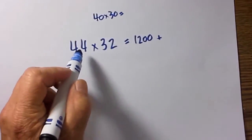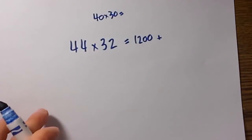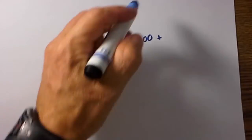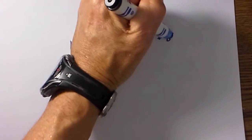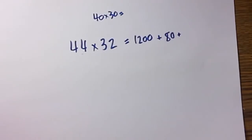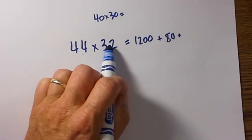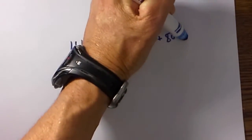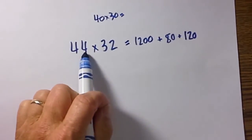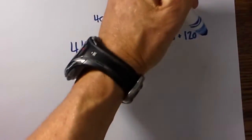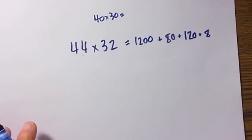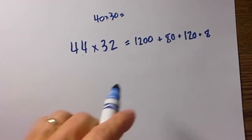The next step is we take 40 times 2 which is 80. Then from 40 plus 2, the next step is 4 times 30 which is 120. Then we go 4 times 2 which is 8.